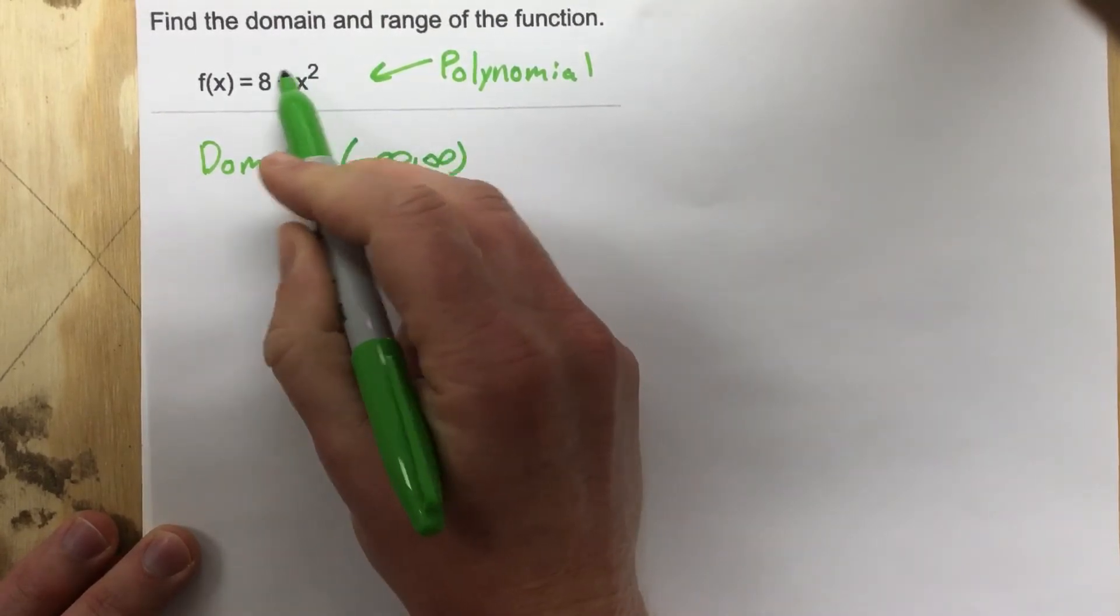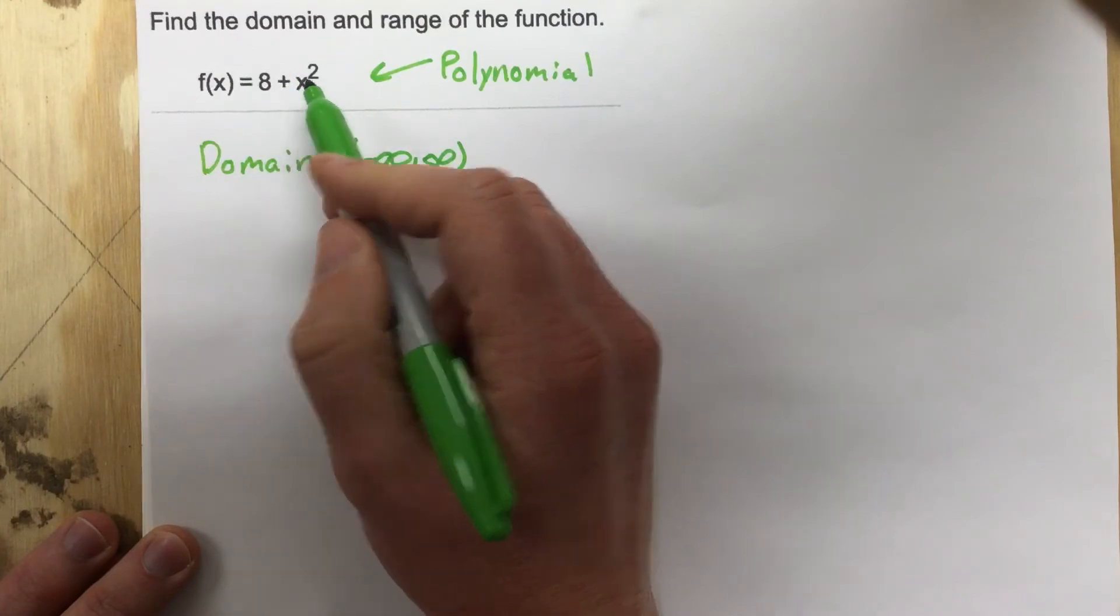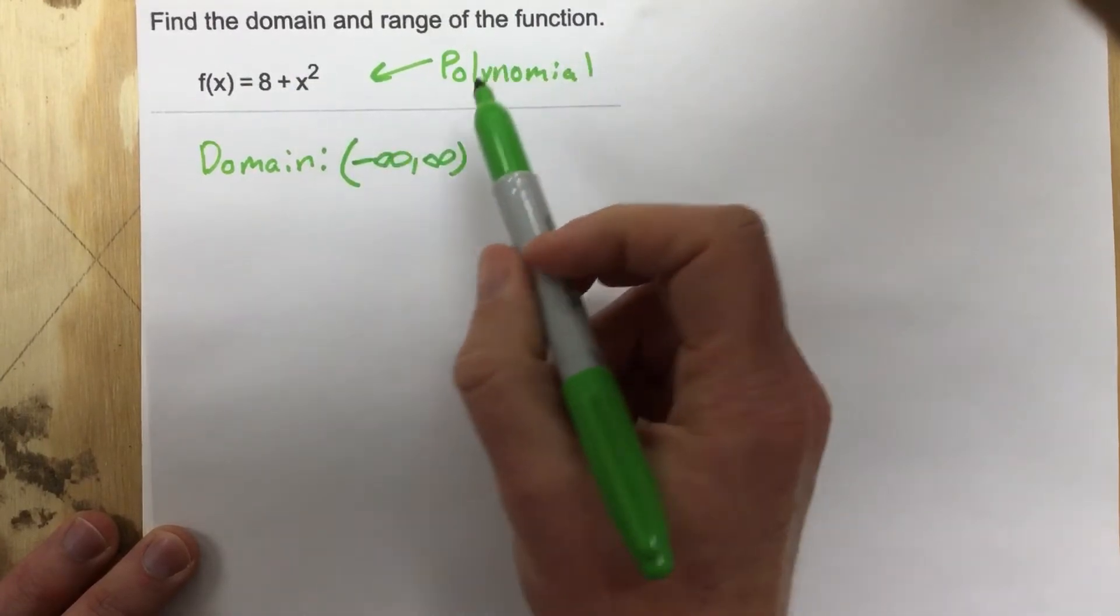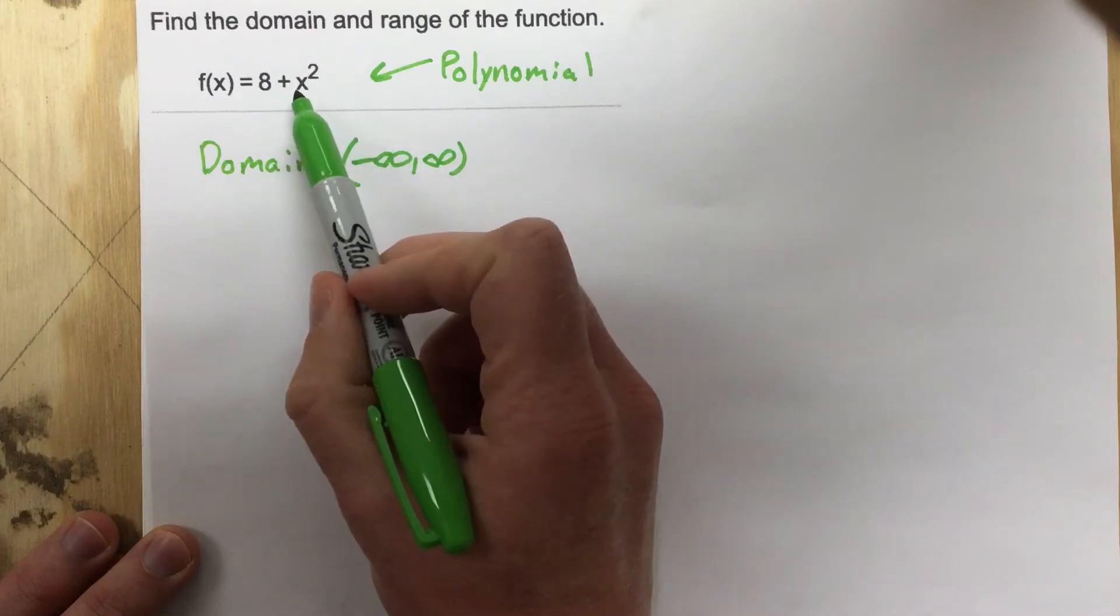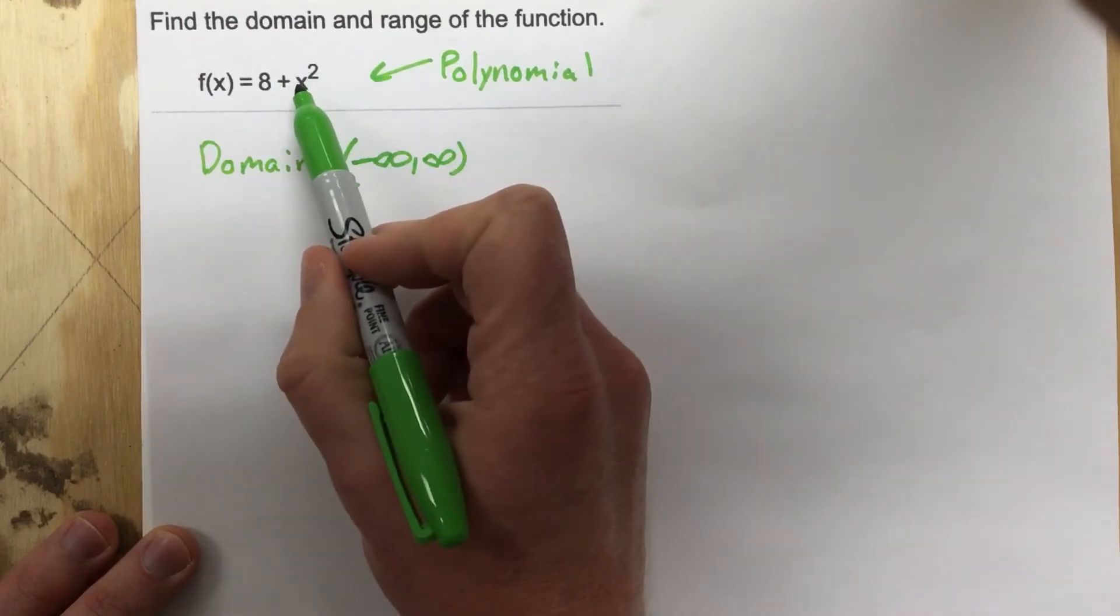Because I can plug anything into a polynomial function and get an output. And so that's how I know that for any polynomial function, any number works.